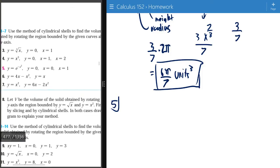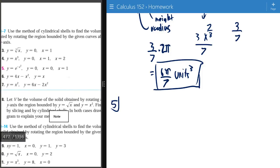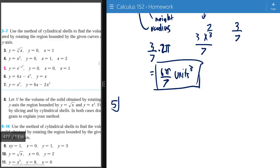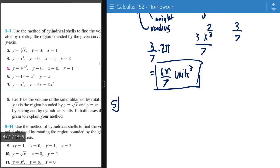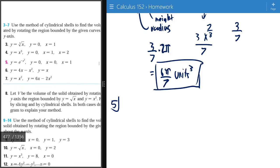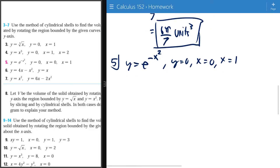Number 5 says use the cylindrical shell method to find the region bounded by the given curve that revolves around the y-axis. So I will just draw out what the given is: y equals negative x squared, y equals zero, x equals zero, x equals one. And usually I just start off by graphing this because it makes it a whole lot easier.